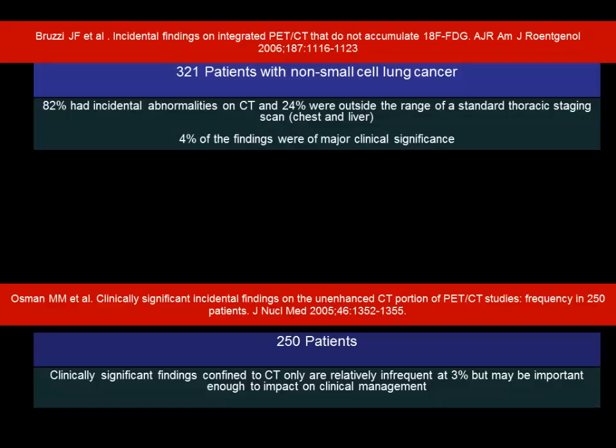Current evidence is more into PET-CT. A paper from MD Anderson looked at 321 patients with non-small cell lung cancer: 82% of patients had incidental abnormalities on CT, and 24% were outside the range of standard thoracic staging. But overall, only 4% of those 82% were of major clinical significance. Another paper with 250 patients found clinically significant findings confined to CT were relatively infrequent — only 3% of incidental findings were clinically relevant.